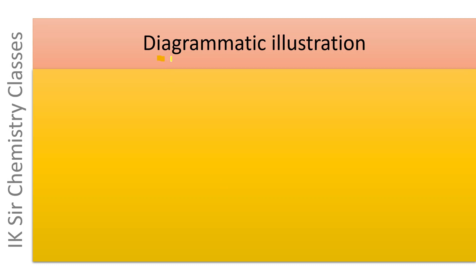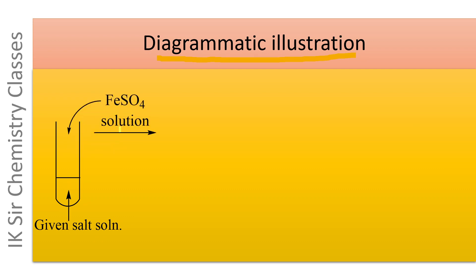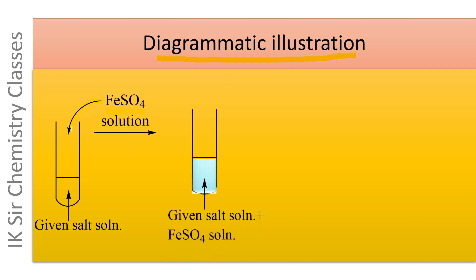Diagrammatic representation of the above three steps. The given salt solution is taken in a test tube, then freshly prepared FeSO4 solution is added and the solution is mixed well. A light green colored solution is obtained, which contains the given salt solution and the FeSO4 solution.